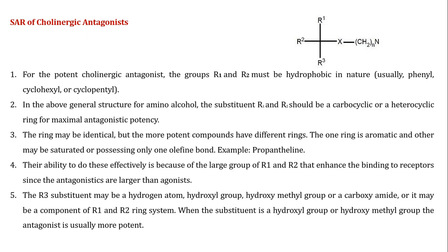This is the basic skeleton for the muscarinic antagonist. We will see what happens when substitutions are carried out at R1, R2, and R3 positions by various substituents, and what the effect will be on duration of action and biological activity. For a potent cholinergic antagonist, the groups R1 and R2 must be hydrophobic in nature, such as phenyl, cyclohexyl, or cyclopentyl.